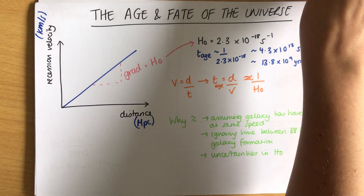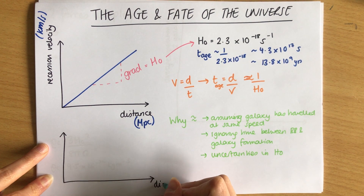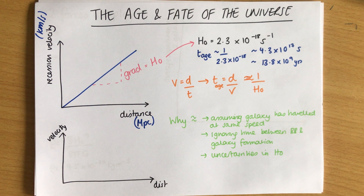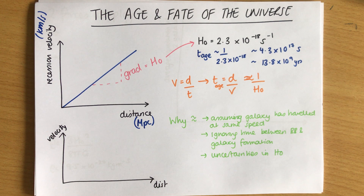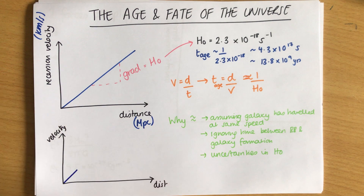Hubble's graph shows the universe is expanding, but is that expansion constant? When Hubble made his graph he worked with quite close galaxies because his telescope wasn't powerful enough to see further. Whenever we see anything in space we're seeing it in the past - looking at the Sun we see it as it was eight minutes ago; Proxima Centauri is four light years away so we see it four years in the past. The closer the galaxy, the less far in the past we're seeing it. Hubble's data covered distances up to about 500 megaparsecs.